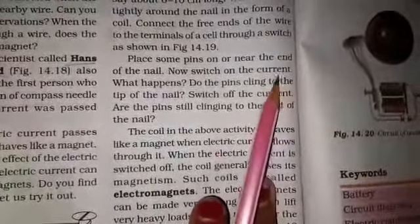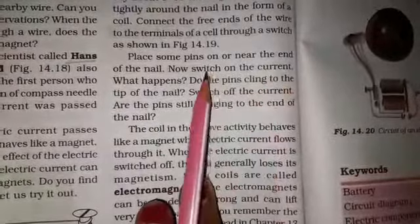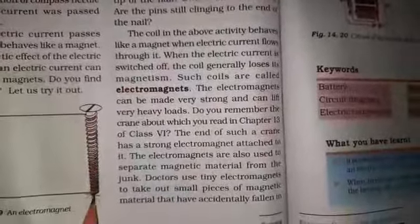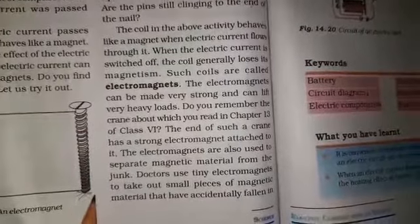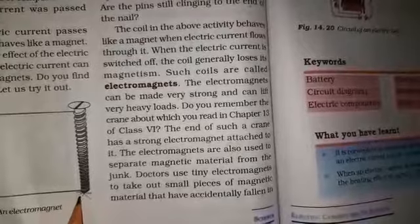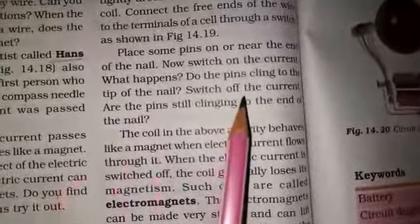Wind the wire tightly around the nail in the form of a coil. Connect the two ends of the wire to the terminals of a cell through a switch as shown in Fig. 14.19. Place some pins on or near the end of the nail. Now switch on the current. What happens?